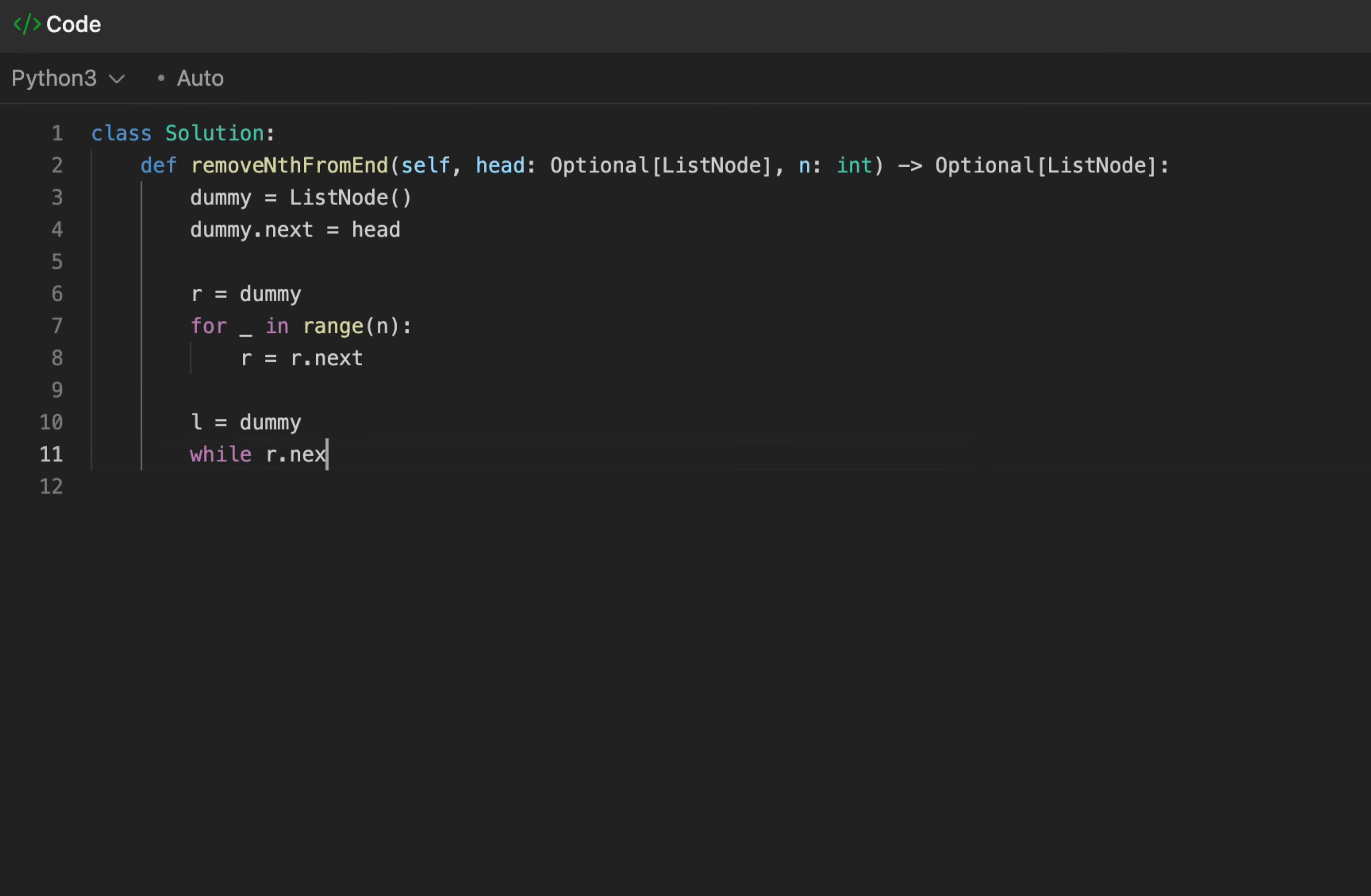So we'll run a while loop, so long as the node after right is not null pointer. On each cycle, we'll move the right pointer along, and similarly, the left pointer. When that's done, our left pointer is on the exact node we want it to be on, the node before the nth node from the end. We'll set its next pointer to its next next node. Lastly, we return the dummy node, which is dummy next. We are finished. Congrats.